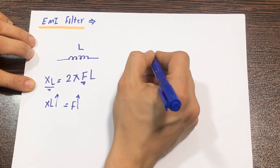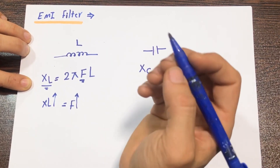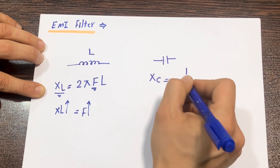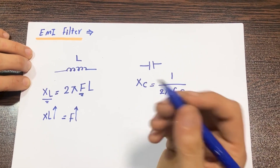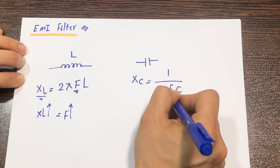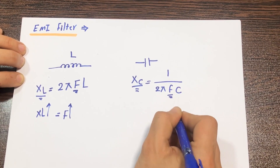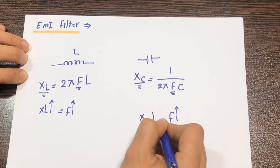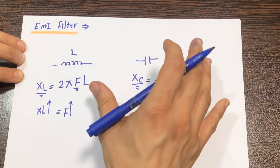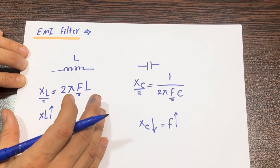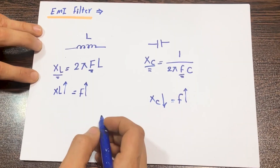In comparison, for a capacitor, the reactance XC has the formula XC = 1 divided by 2π times frequency times capacitance. The relationship between frequency and XC is the inverse — if frequency goes up, XC goes down. This means a capacitor is inherently a high-pass filter, while an inductor is a low-pass filter. We can connect these two components together to make an LC filter.